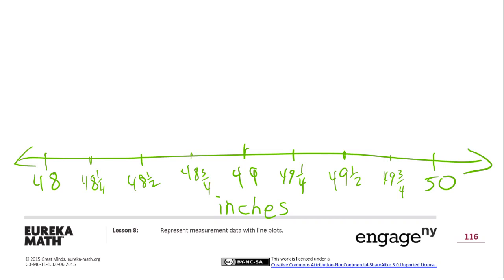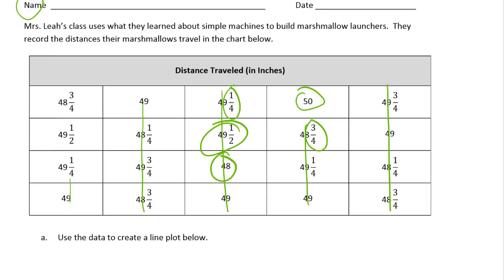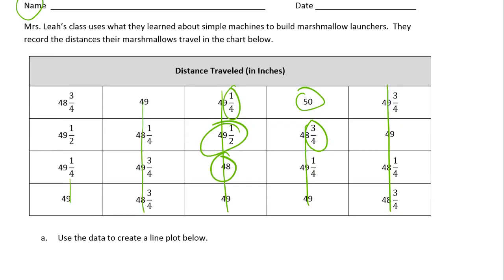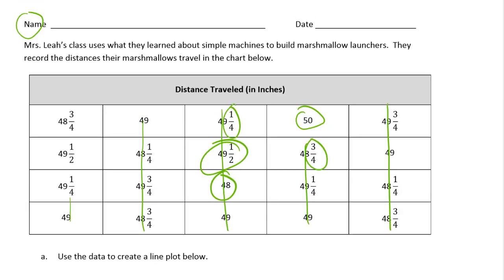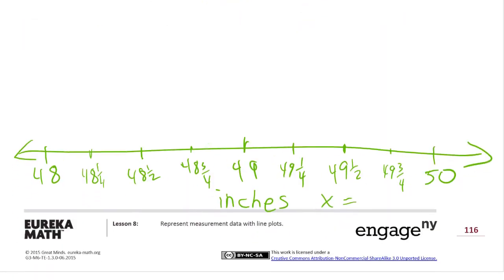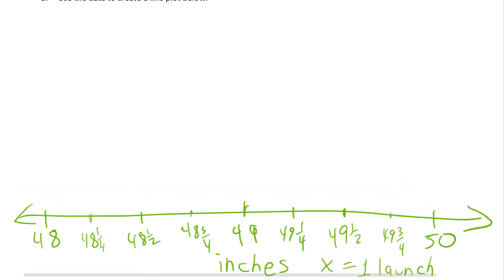I want to say what the X's are going to be. The x equals what? What am I measuring again? Each x is a launch, right? We're not measuring marshmallows, we're measuring the distance that the marshmallow traveled. So it'd be like a shot or a launch. X equals one marshmallow launch, or just one launch, because these aren't measurements of marshmallows, they're measurements of how far they went when they were launched.